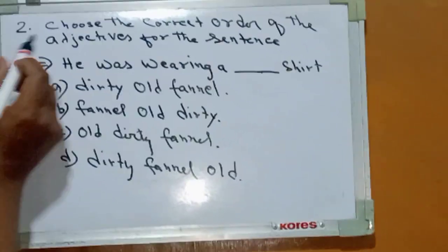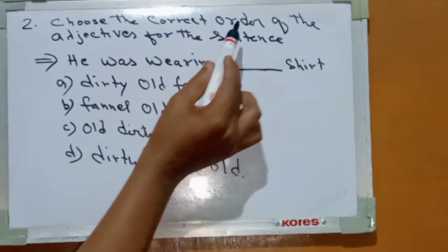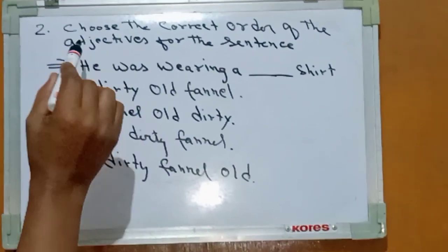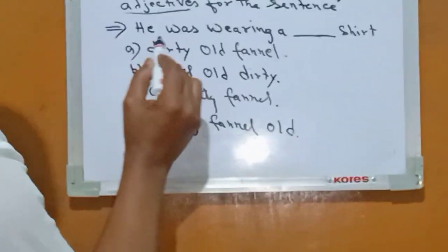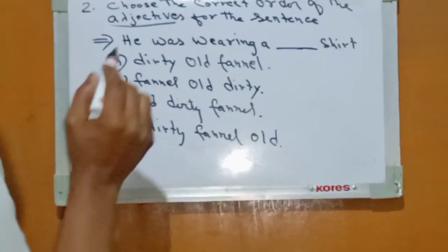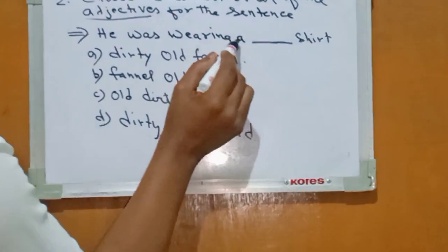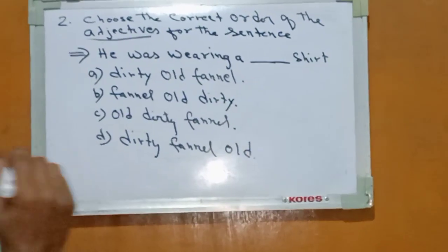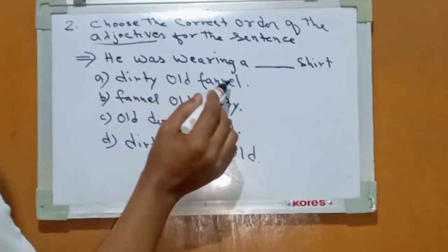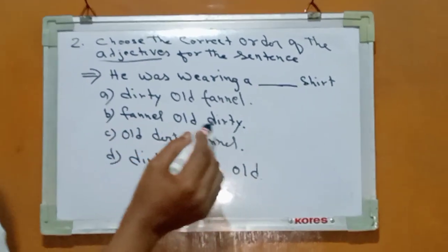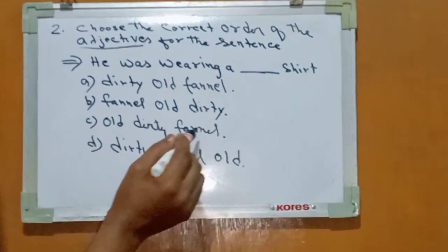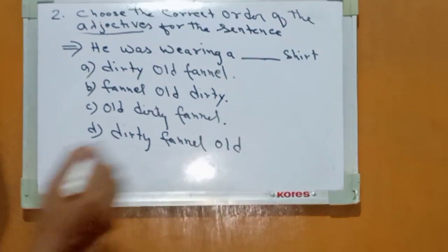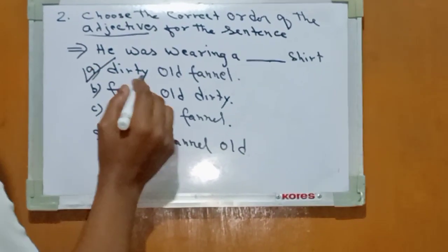Question number two: choose the correct order of the adjectives for the sentence. He was wearing a dash shirt. Option A: dirty all flannel. Option B: flannel all dirty. Option C: all dirty flannel. Option D: dirty flannel all. And the right answer is Option A: dirty all flannel.